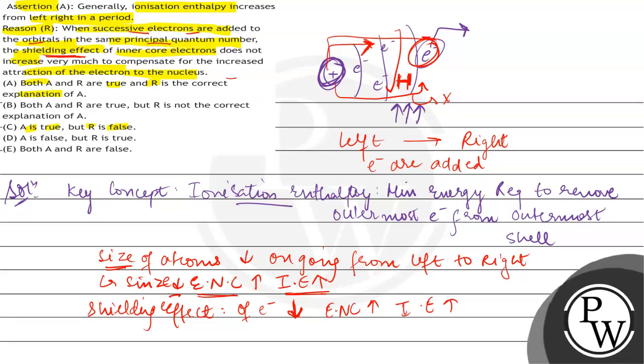So the reason statement is also correct, as well as the assertion statement. So option A, which says both assertion and reason are true, and reason is the correct explanation of A - yes, reason correctly explains the cause of A. Therefore, the correct option is A.